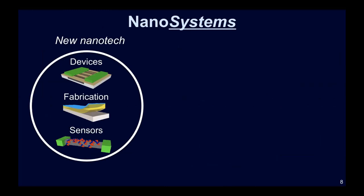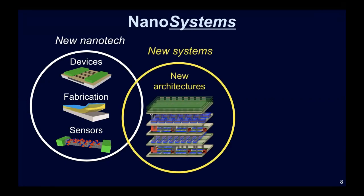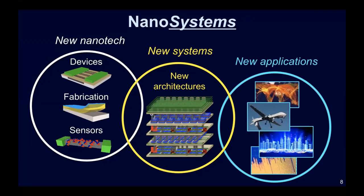This is where comes the notion of what I call nano systems. You need new nanotechnologies — which could mean new devices, new fabrication methods, or new kinds of sensors. When you integrate these using new fabrication techniques, what is absolutely crucial is that you must be able to build new architectures that are not possible with existing technologies. If you just retrofit existing architectures by replacing existing devices with new ones, you will still be stuck by the fundamental bottlenecks of existing architectures. New nanotechnologies must enable new architectures, which in turn enable new applications — in our case, abundant data applications.